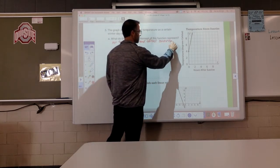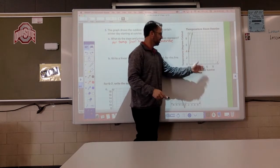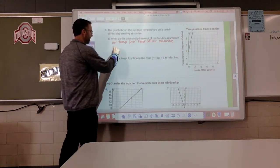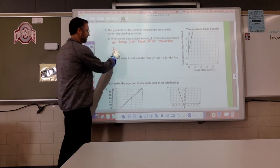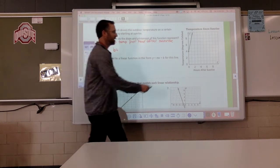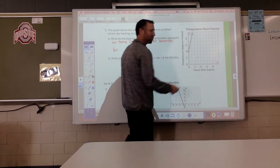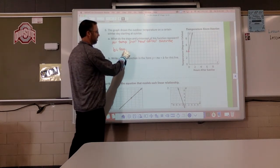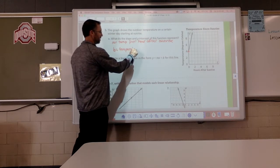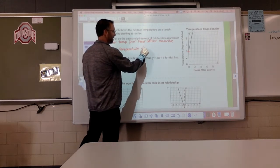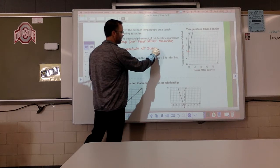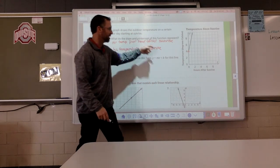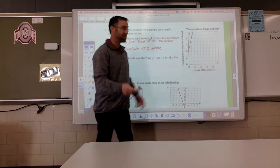And again, we're just comparing our y variable to our x variable. What does our y-intercept represent? Well, again, that's this value here. What does it represent? It represents the temperature at sunrise, at the beginning of the day, or when this graph started. This graph started at sunrise. So, this is telling us the temperature at sunrise.